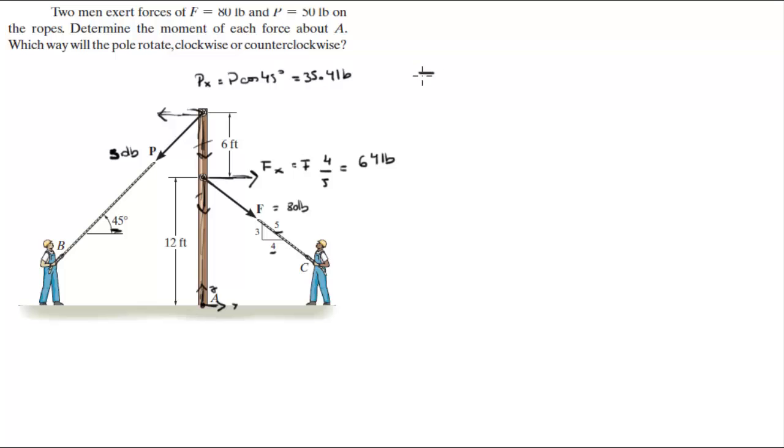So now the moment that P is creating is given by the magnitude of P, which is 35.4 pounds, the magnitude of P in the X, times the length of the lever arm which is 6 feet plus 12 feet which is 18 feet. Assuming counterclockwise is positive, it's turning this whole thing counterclockwise so it's positive, and it's equal to 637.2 foot pounds.